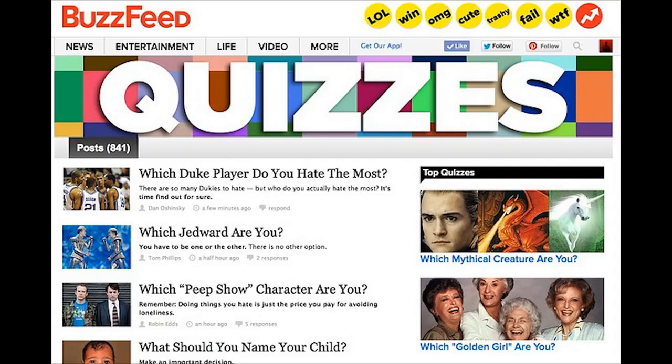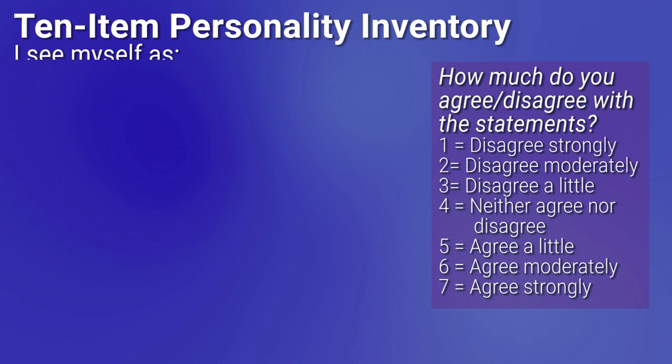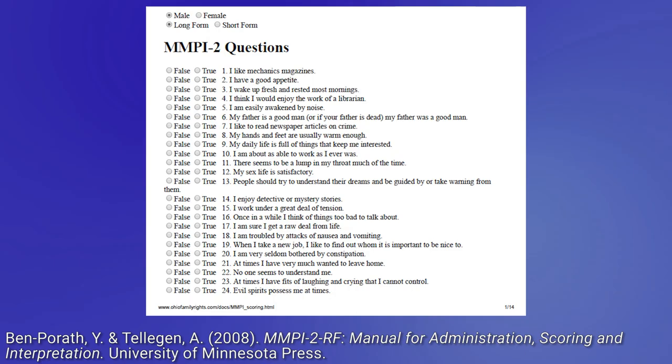So how do we measure personality? There are two broad categories: inventories and projective tests. Personality inventories are almost like professional versions of Buzzfeed quizzes — a bunch of questions are asked of the person, either by filling out the test themselves or a person giving them the test. A quick example is the 10-item personality inventory, or the TIPI for short. With the TIPI, you have a Likert scale ranging from 1 — strongly disagree — to 7 — strongly agree — and you rate yourself on the 10 items. The TIPI is seeing where people fit on the Big Five model of personality.